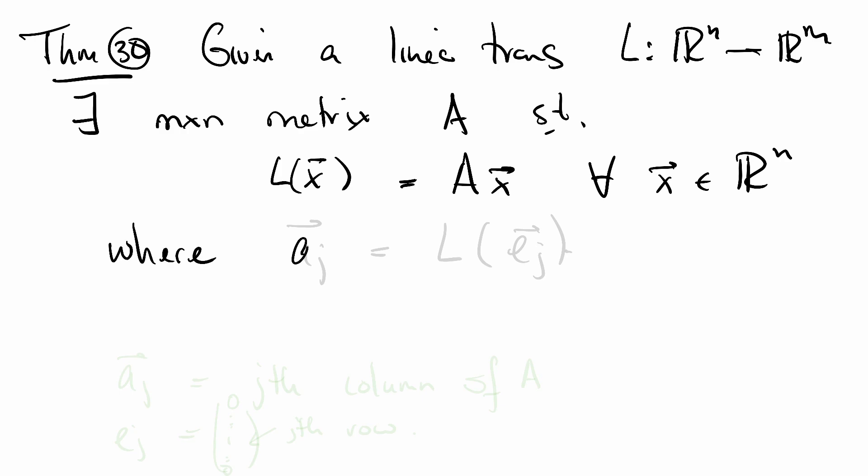The columns of A are well defined. The jth column of A is L applied to E_j, where A_j is the jth column of A, and E_j equals 0, 1, 0, where the 1 is in the jth row.